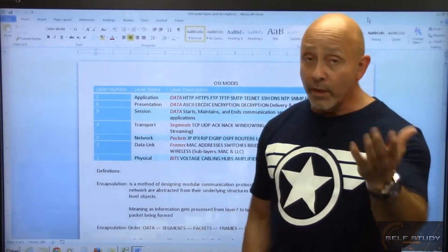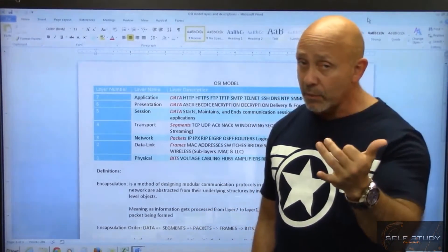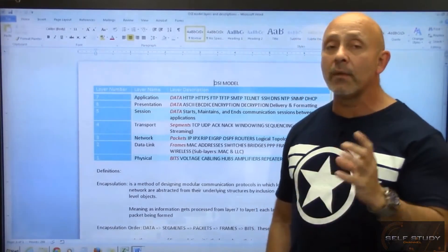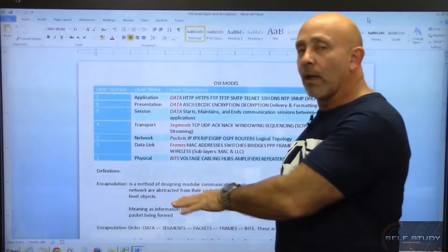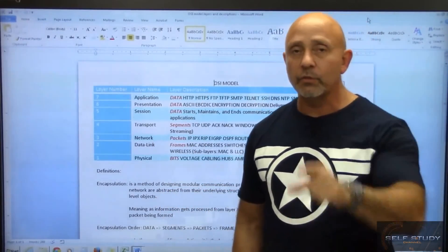So know definitely the order of the layers, know the numbers of the layers, the mnemonic device. All People Seem To Need Domino's Pizza. But now in the next lesson, we're going to separate the upper layers from the lower layers and we'll give explanations on those. I'll see you in the next session.